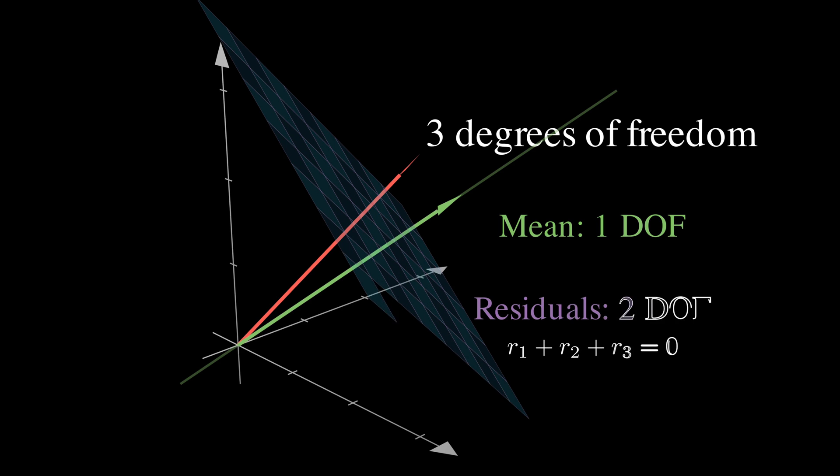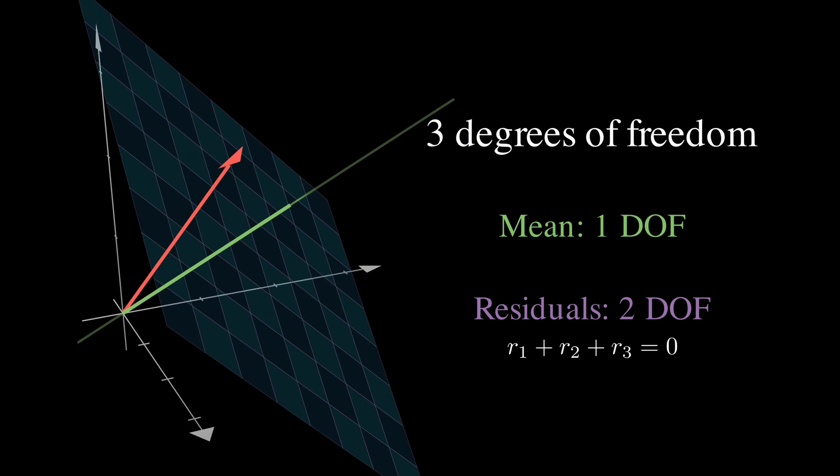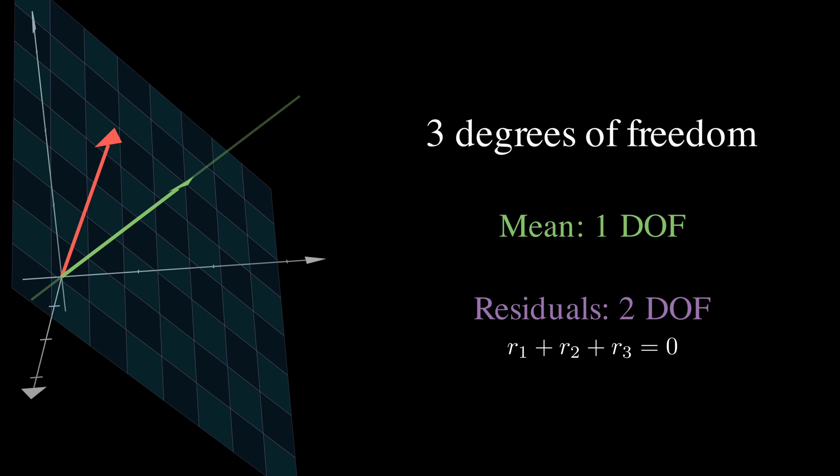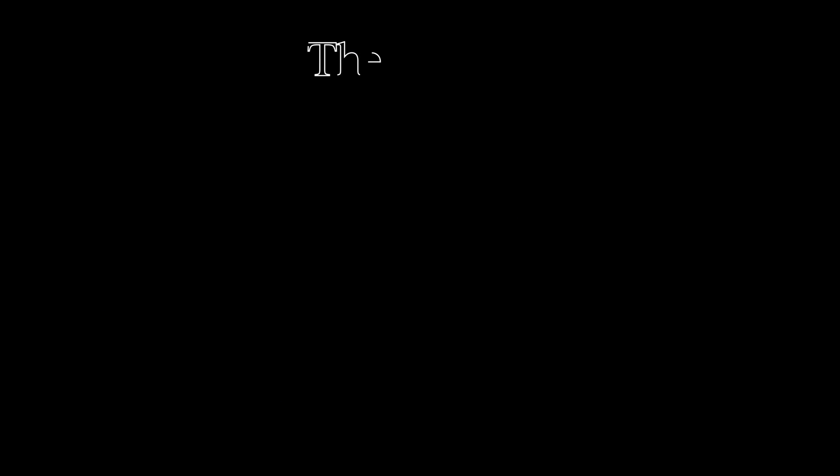But the residual vector, with its constraint that all three residuals sum to zero, is now confined to a two-dimensional plane in three-dimensional space. If you know two of the residuals, the third one is automatically determined, because it has to make the sum equal zero. And this pattern continues.